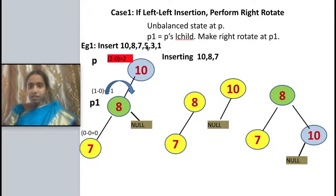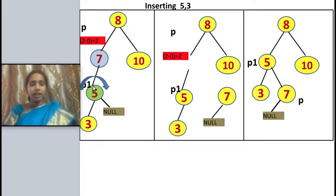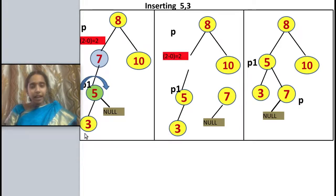Now I have to insert 5. As in a binary search tree, 5 is less than 8 so it goes left, and less than 7 so it is inserted as left child of 7 — no unbalanced condition. Next, inserting 3: 3 is less than 8, less than 7, and less than 5, so 3 is placed as the left child of 5.